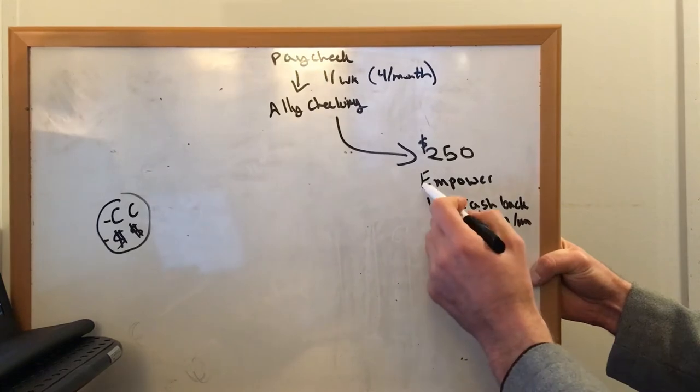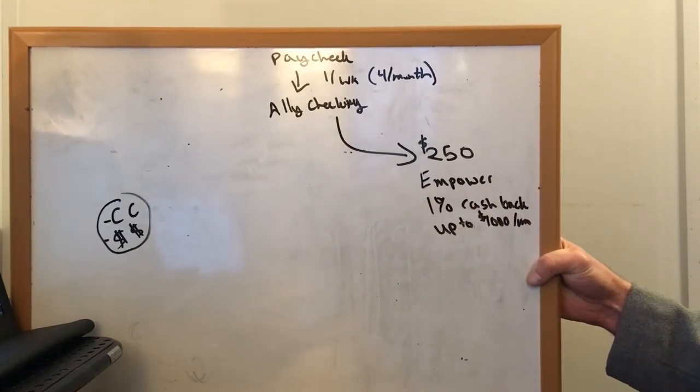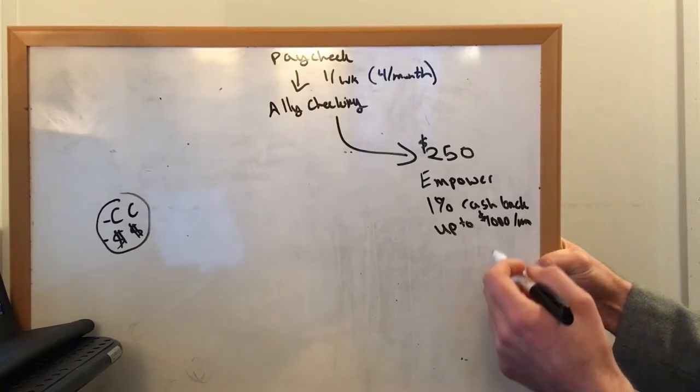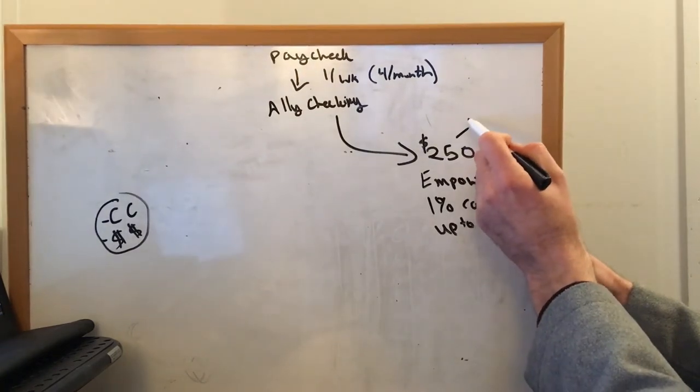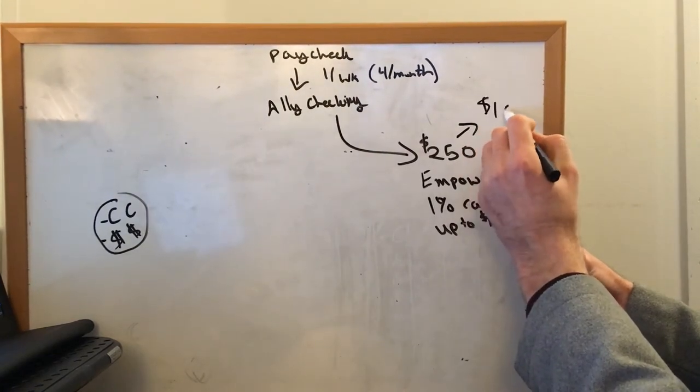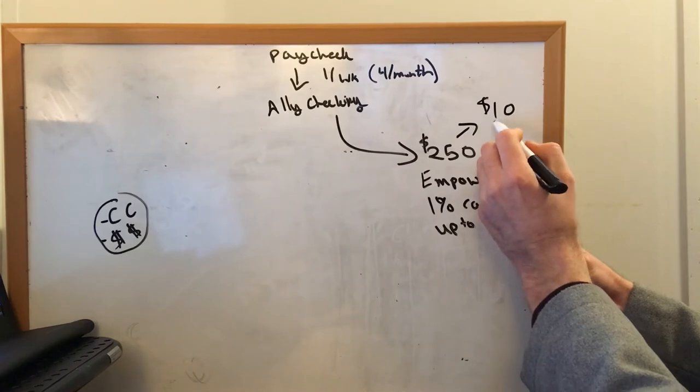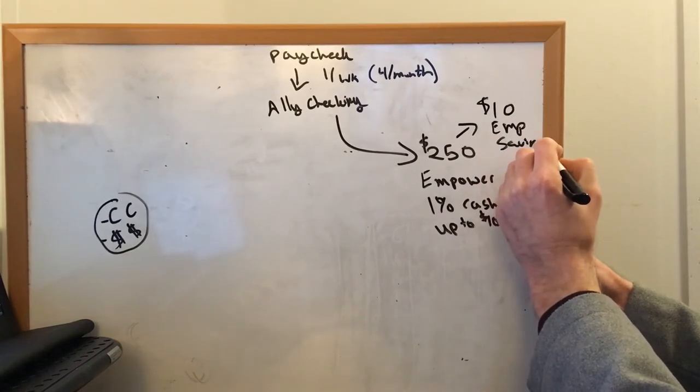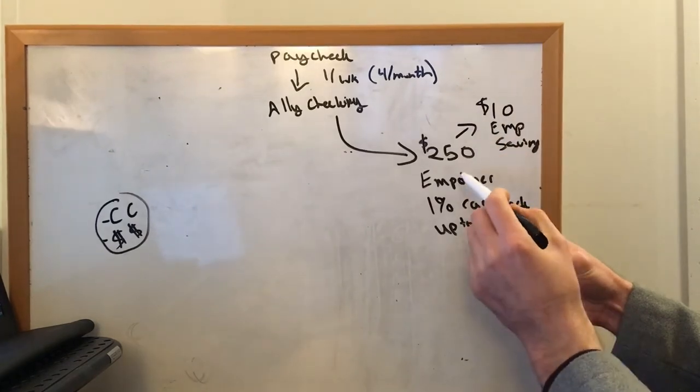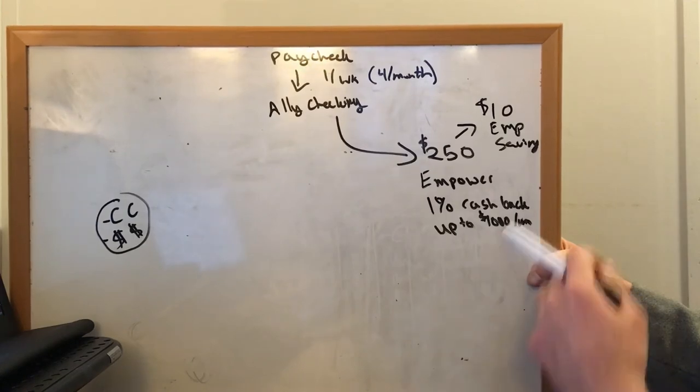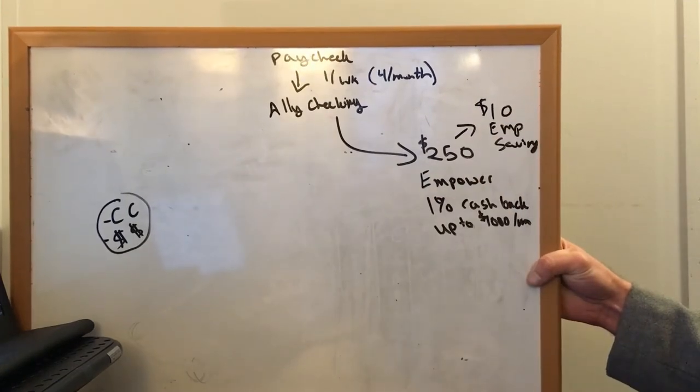Real quick whack that subscribe button. I'll do a review of this checking account at some point. Another thing I do as well is every week, $10 comes out of here into the savings account by Empower. And that's kind of my backup fund for this checking account. So if I need some extra money one month, I can just pull it out there.